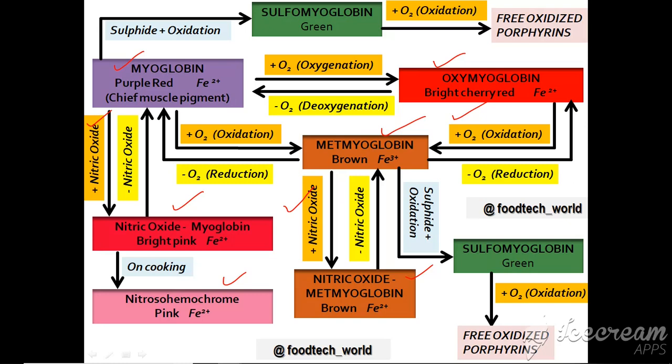Both myoglobin and metmyoglobin, when oxidized in the presence of sulfide ions, form sulfomyoglobin, which is green in color. When sulfomyoglobin is further oxidized it forms free oxidized porphyrins. This chart is very important as many exam questions have been asked from these reactions.